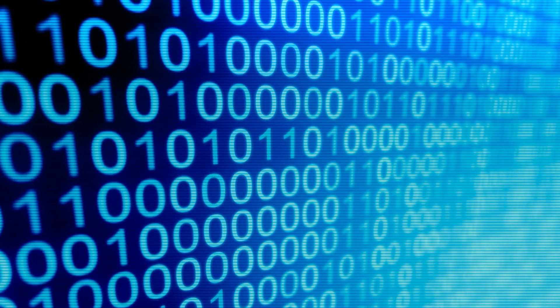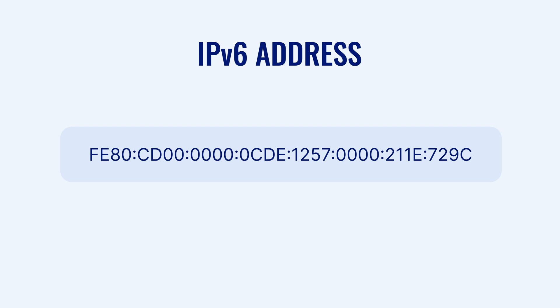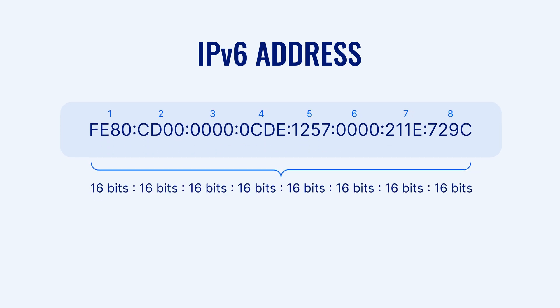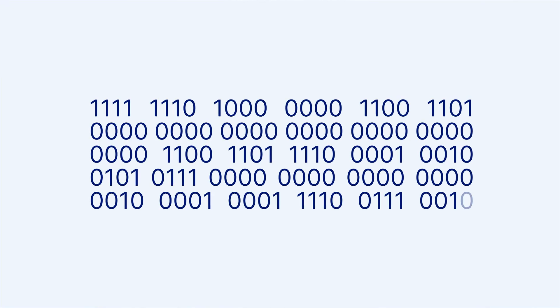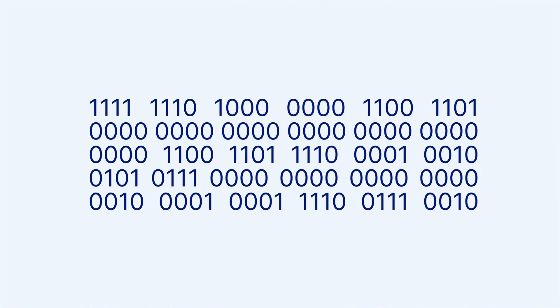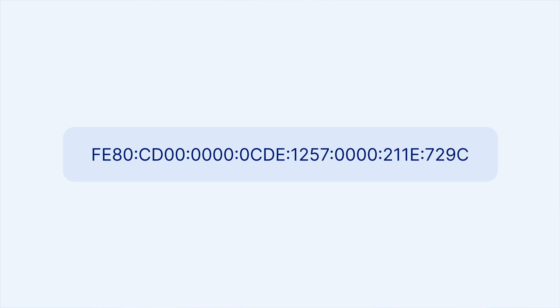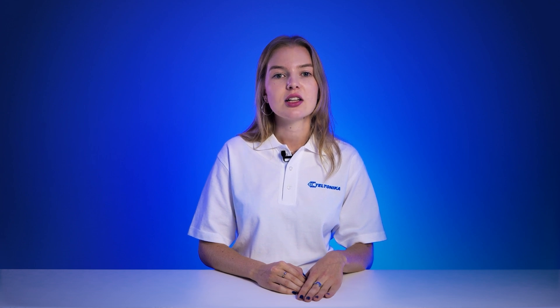IPv6 addresses are initially made up of binary as a series of zeros and ones. And let's be honest, no one's got time to type up that whole chain of digits each time. This is why IPv6 addresses are usually arranged in 8 groups, each containing 16 bits. These bits are expressed as hexadecimal digits, so instead of dealing with an extensive binary code, you'll most likely have something like this. And if this is too long as well, IPv6 addresses can be abbreviated as long as the process follows appropriate rules.